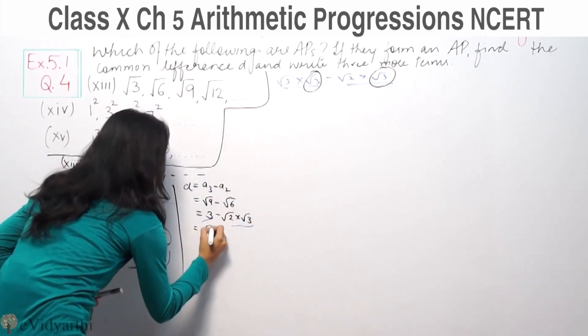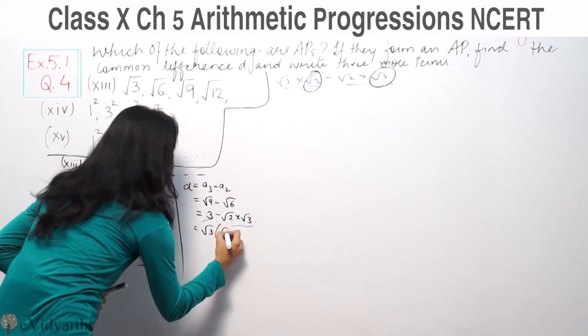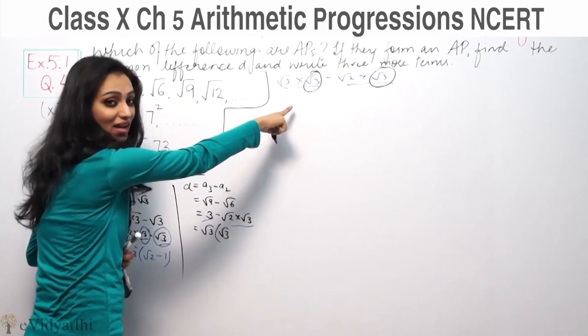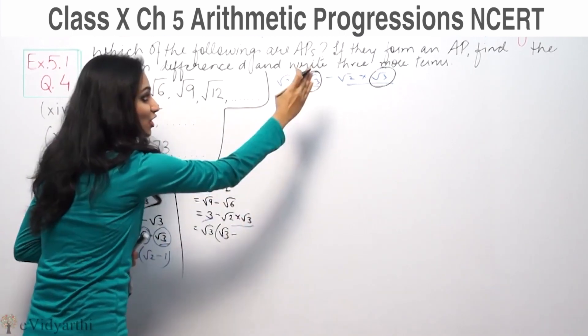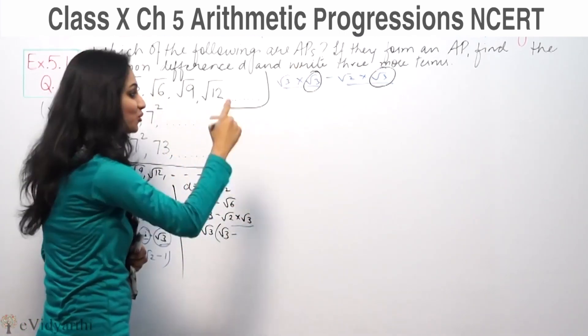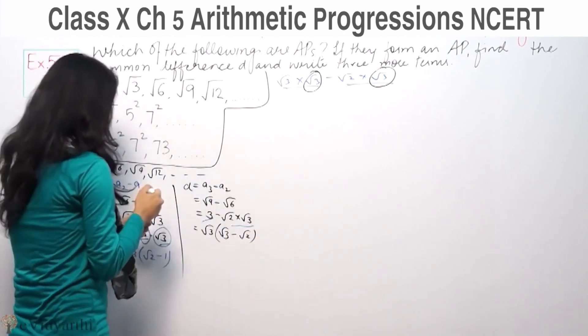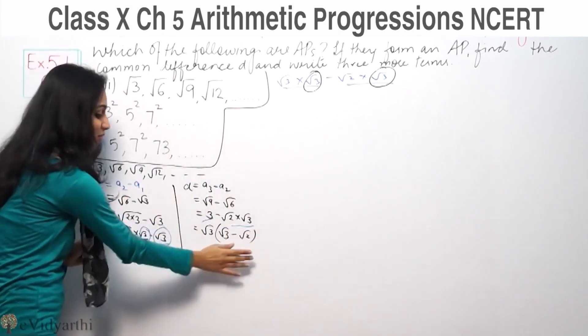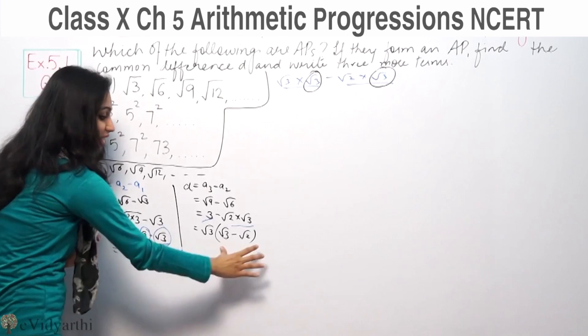Generally children say nothing is common, but 3 is root 3 times root 3. So take out root 3 common from both terms. Root 3 bracket root 3 minus root 2.